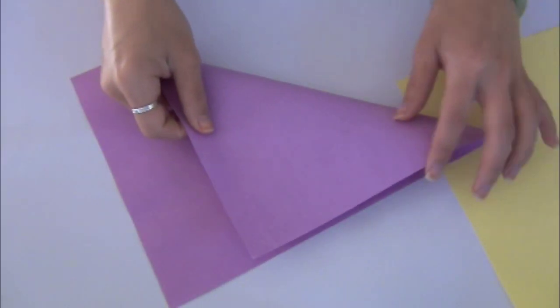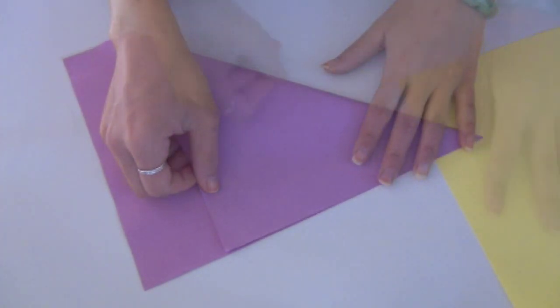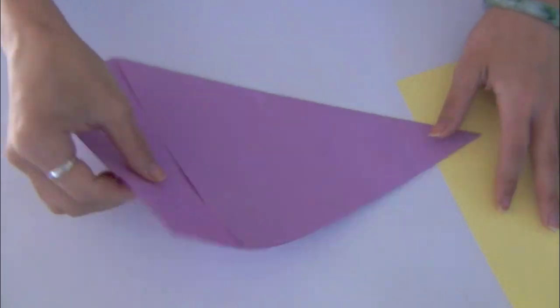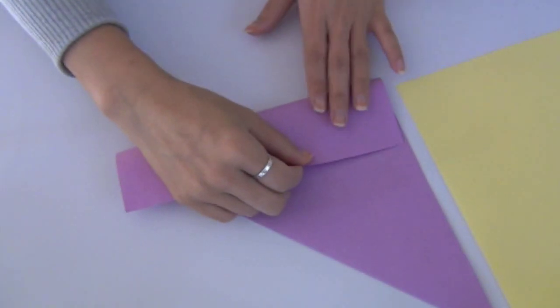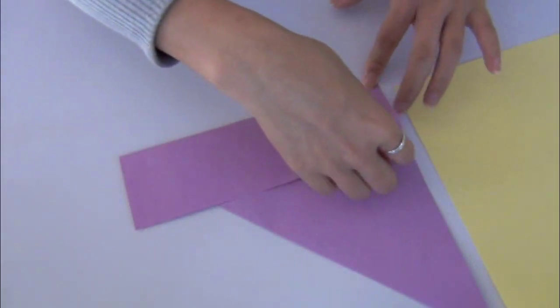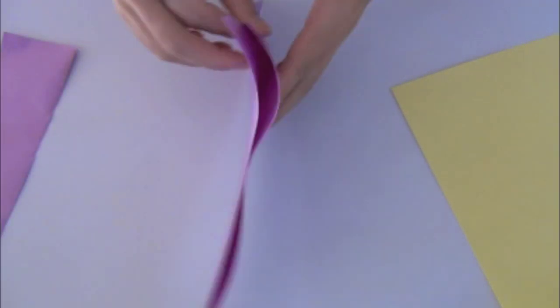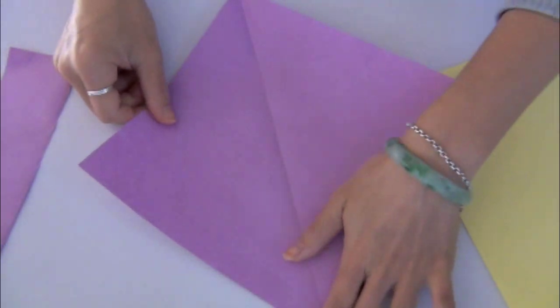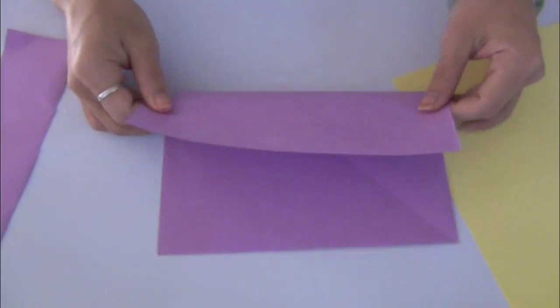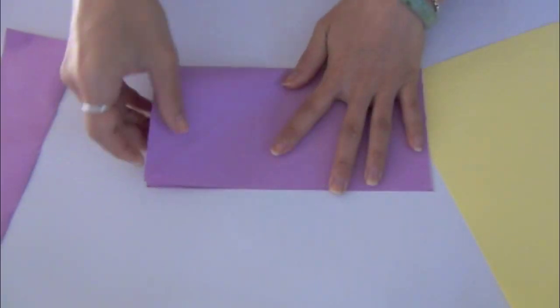You will need two sheets of paper. Pick any color of your choice; it could be identical or different colors like what I'm doing right now. I am using regular color printing paper. To make it into a perfect square, I fold the paper into a triangle and then remove the excess paper.